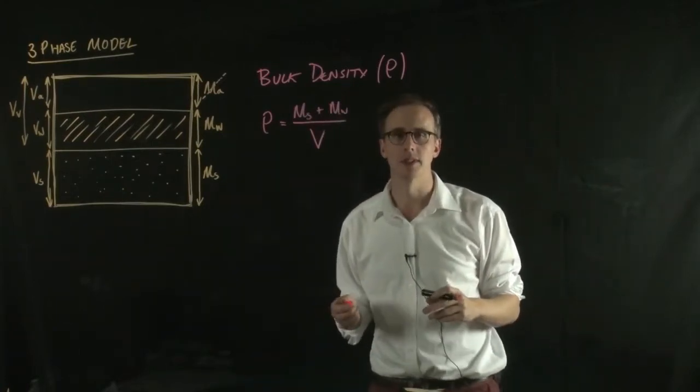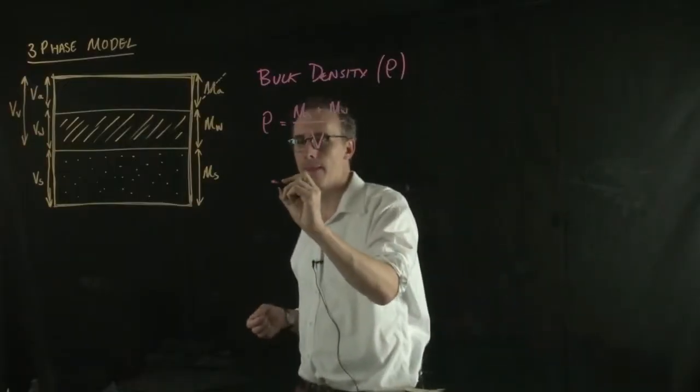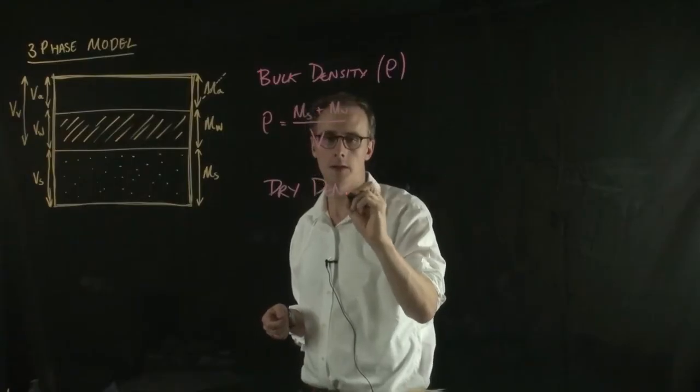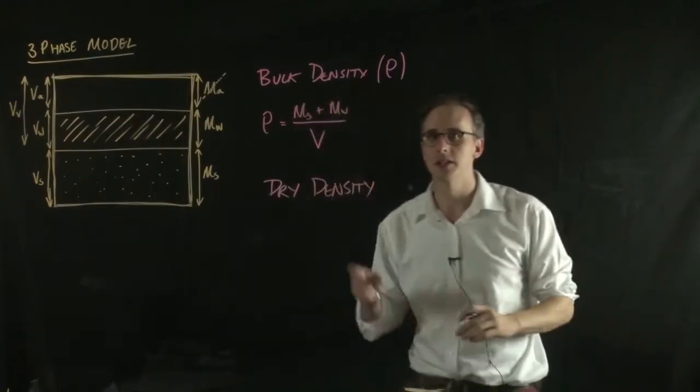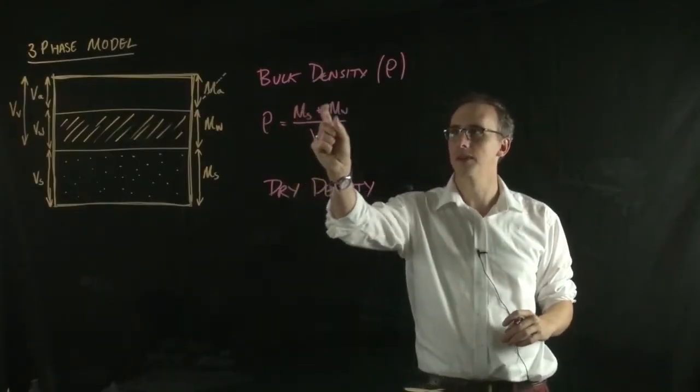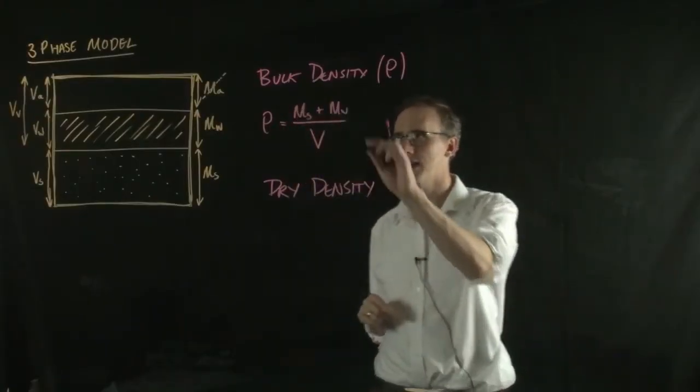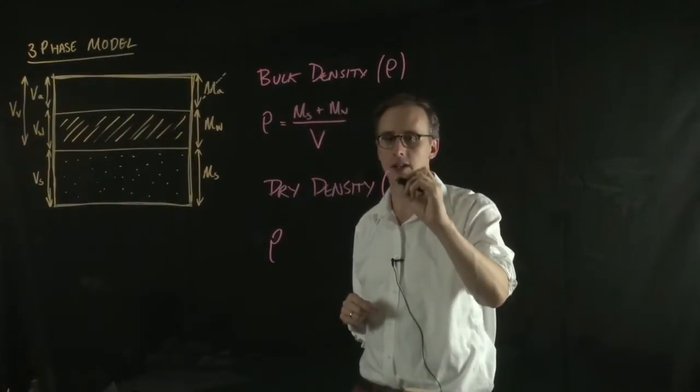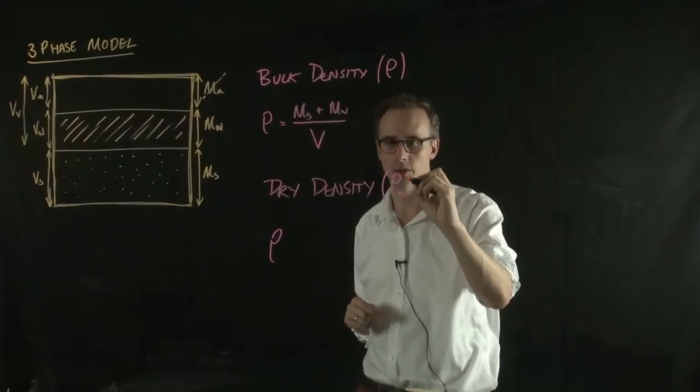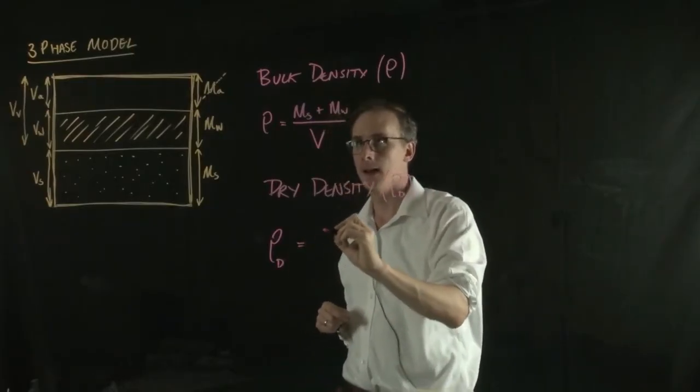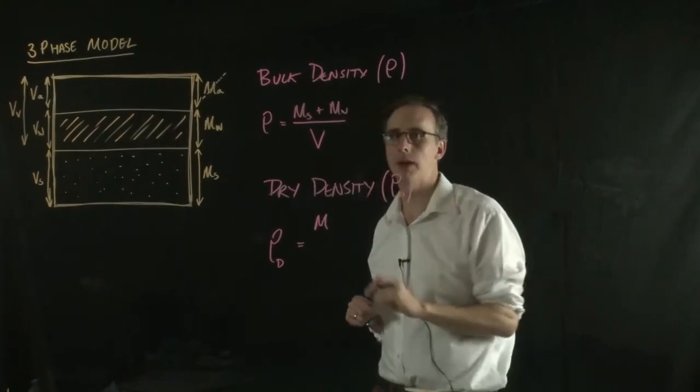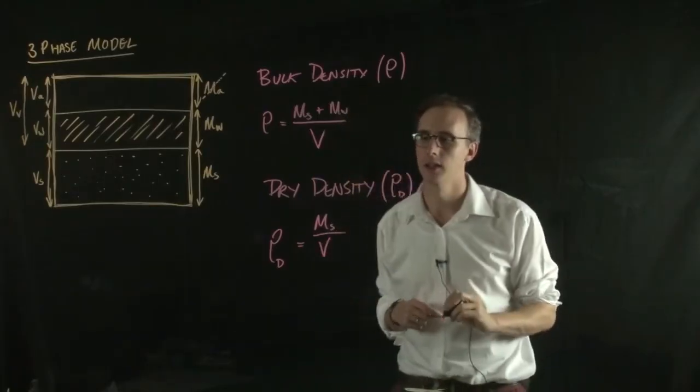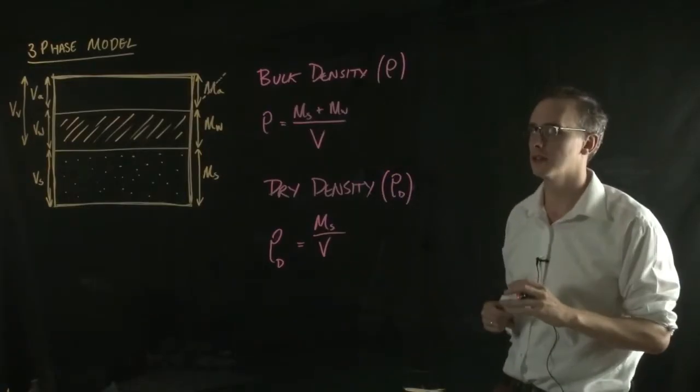Another useful parameter to define is the dry density, which is really just the bulk density with the mass of this water removed. So if we take the mass of the water out of it, we'll have the dry density. So we give the dry density the symbol rho subscript d. And if we just pick out the mass of the water from this equation, it becomes the mass of the solid divided by the total volume. So that's the dry density.